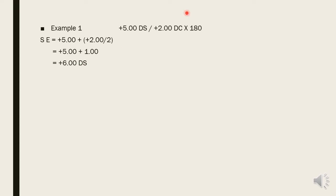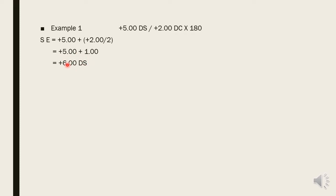When you give this patient the spherical equivalent correction, if their best-corrected vision is 6/6 with the full prescription, they can still see around 6/6 or near 6/9 with the spherical equivalent, because the circle of least confusion is lying right on the retina.